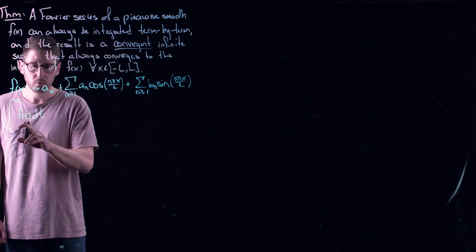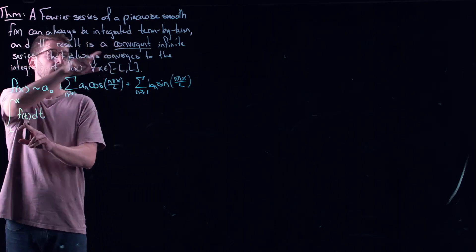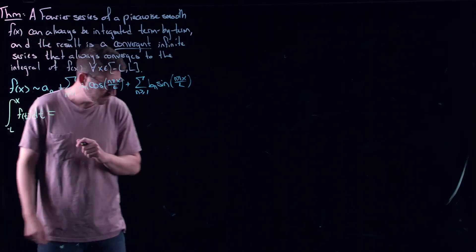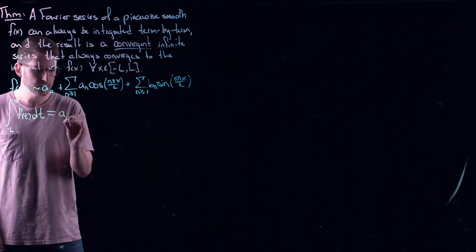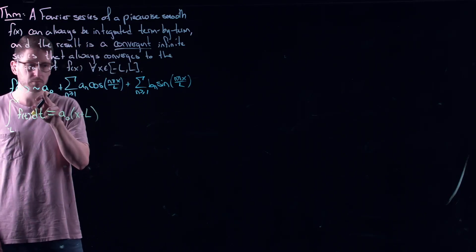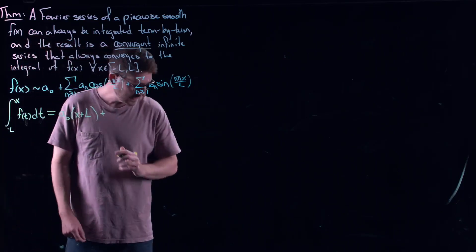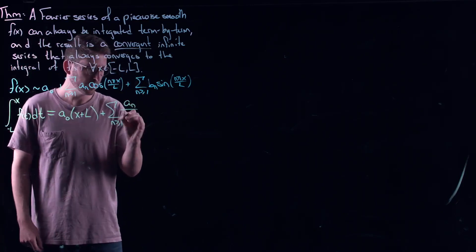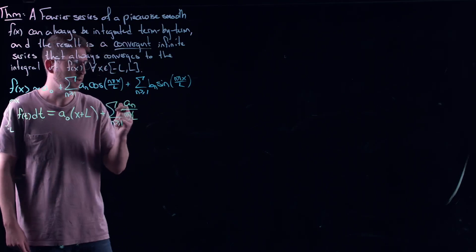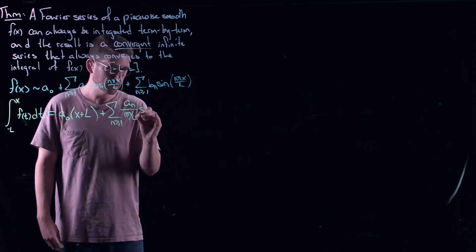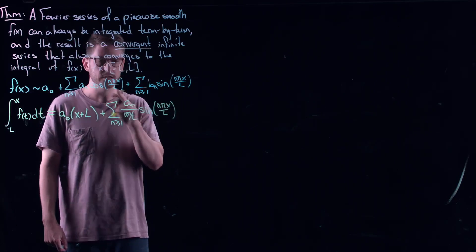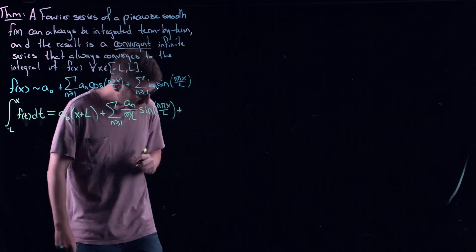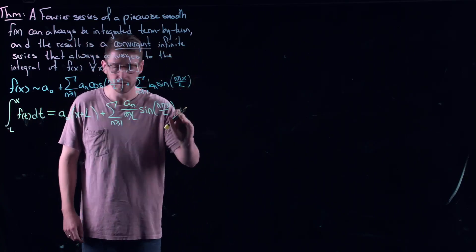Here's what we know. We know that this is equal to — no longer a squiggle, it's perfectly equal because it's a convergent series everywhere. We get a_0 times x plus l — that's integrating the constant term — plus, integrating term by term gives me a_n over n pi over l times sine of n pi x over l. That's just the anti-derivative, the integral from minus l to x of that term.